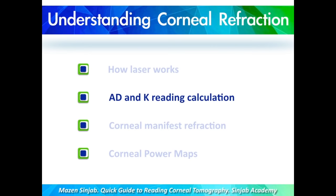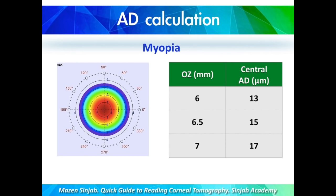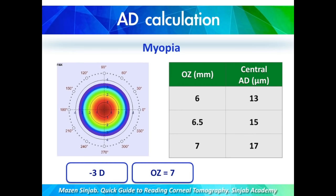Ablation depth and K-reading calculation. For myopia: for each one diopter of myopic correction, the laser ablates approximately 13 microns with a 6 mm optical zone, 15 microns with a 6.5 mm optical zone, and 17 microns with a 7 mm optical zone — so remember 6/6.5/7 → 13/15/17. Example: minus three diopters sphere with a 7 mm optical zone gives an ablation depth of roughly 51 microns.